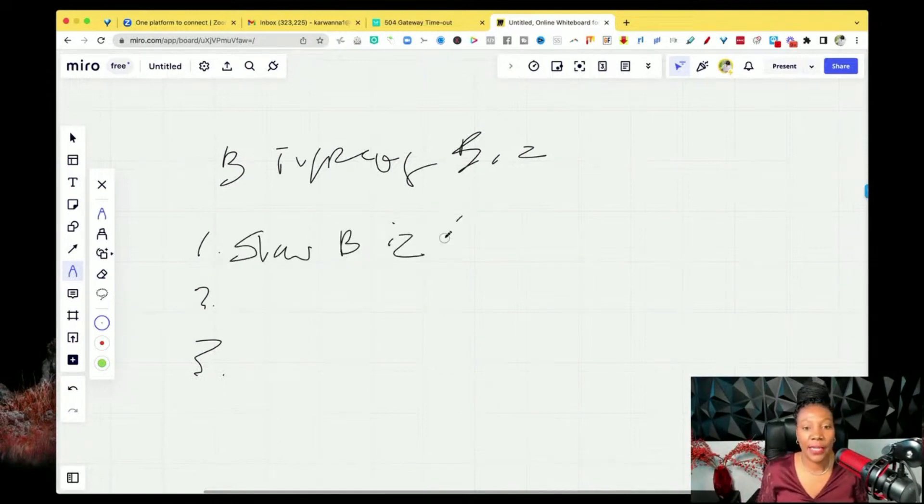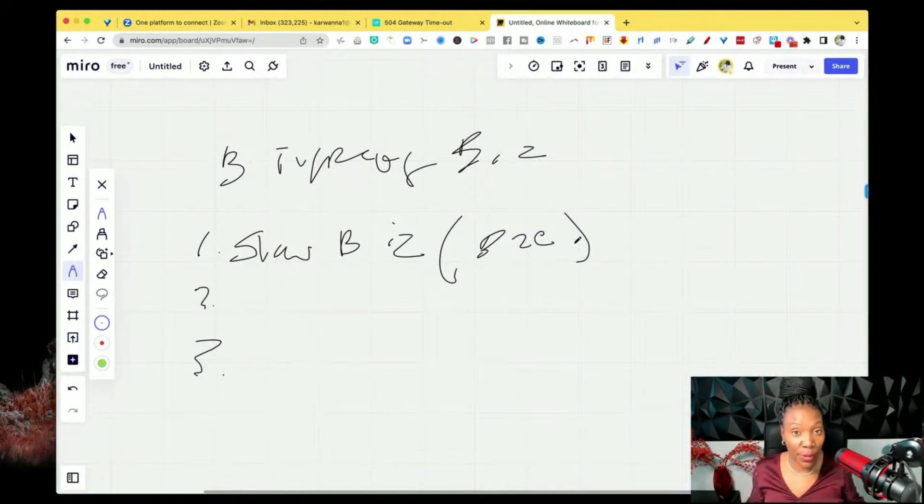Slow biz is ideally a B to C or business to consumer business model. That is the slowest type of business that you can grow. Not saying that it's impossible to grow. It's not impossible. It just takes...